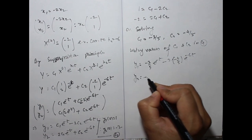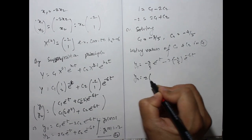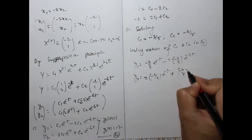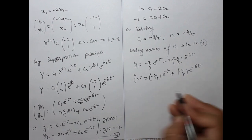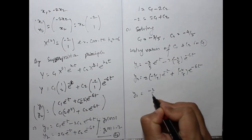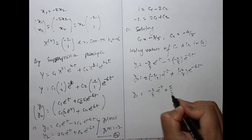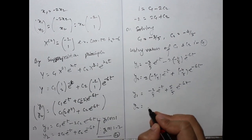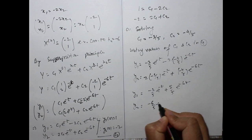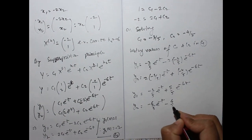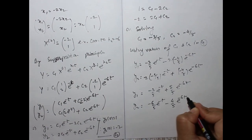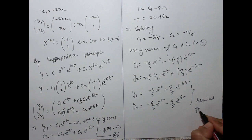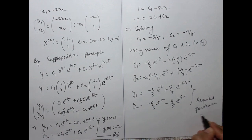Substituting c1 = −3/5 and c2 = −4/5 into the general solution: y1 = (−3/5)e^(−t) + (8/5)e^(−6t) and y2 = (−6/5)e^(−t) − (4/5)e^(−6t). This is the required particular solution.